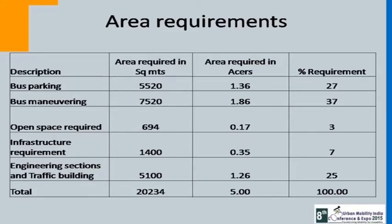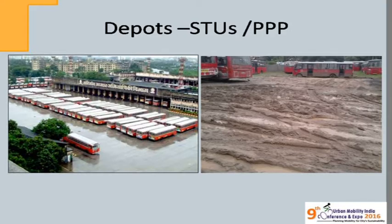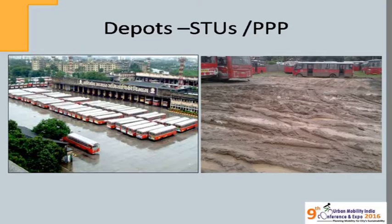There are a lot of tenders nowadays where corporations ask operators to construct the depot — a land parcel is given to the operator who is asked to construct and operate it. But if you see the contract period of 8 to 10 years versus the life of a depot, which is more than 50 to 60 years — BST has depots around 60 years old, CSTC 50 years, DTC 60 to 70 years — that is much higher than the contract period. So depot construction should be on the authority's side; the operator can handle maintenance and operation. Looking at two illustrations comparing an authority-constructed depot versus an operator-managed land parcel, you can clearly see the difference in quality.